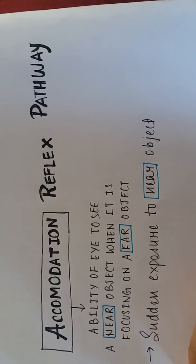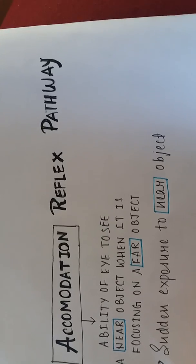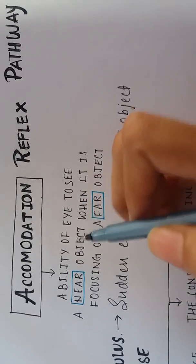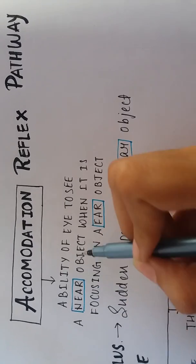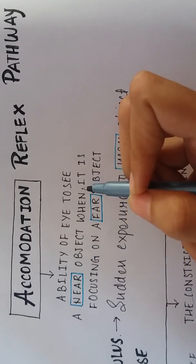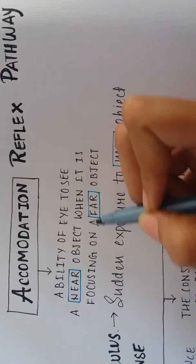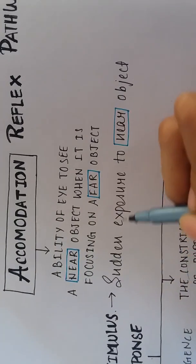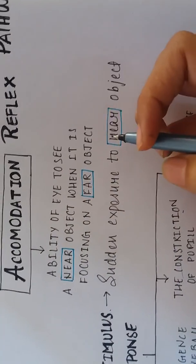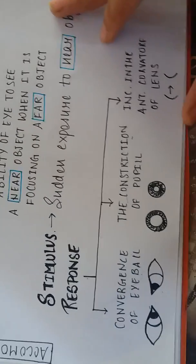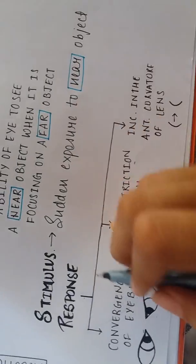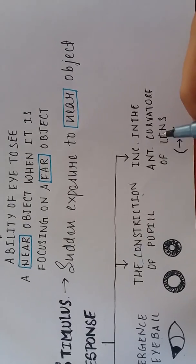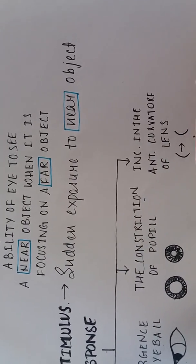The accommodation reflex refers to the ability of the eye to see a near object when it is focusing on a far object. The stimulus is sudden exposure to a near object. The three responses are: convergence of the eyeball, constriction of the pupil, and increase in the anterior curvature of the lens.